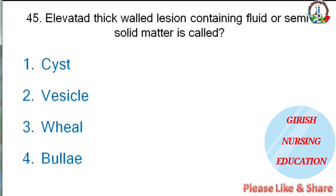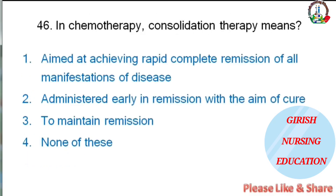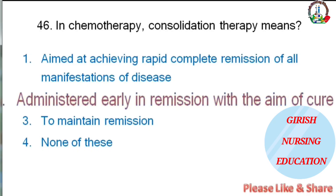An elevated thick-walled lesion containing fluid or semi-solid matter is called — cyst, vesicle, wheal, or bulla? The correct answer is cyst. In chemotherapy, consolidation therapy means — aimed at achieving rapid complete remission, administered early in remission with the aim of cure, to maintain remission, or none of these? The correct answer is administered early in remission with the aim of cure.